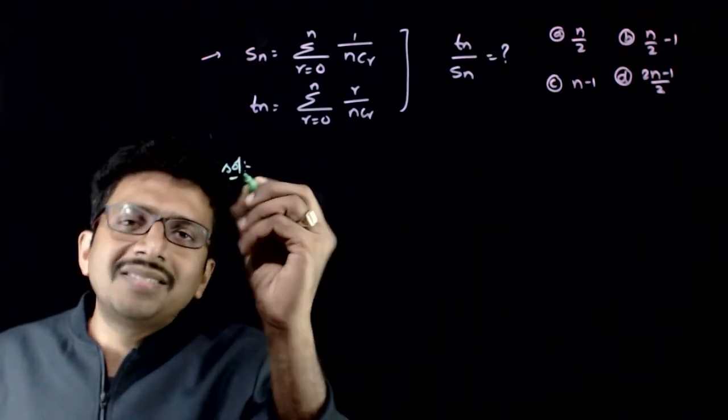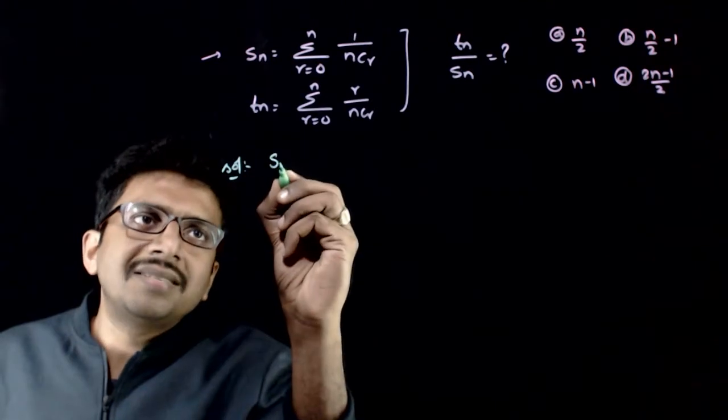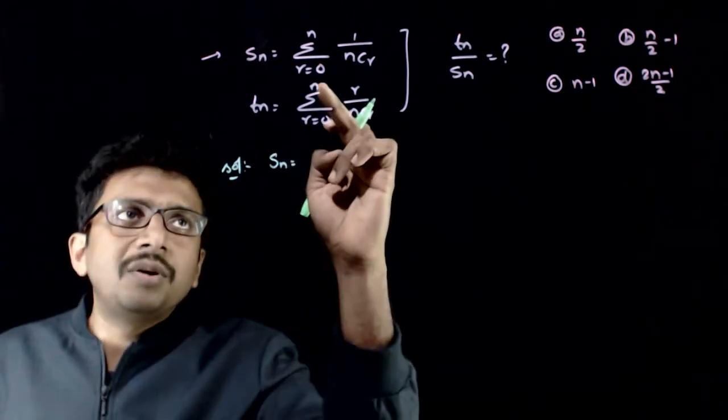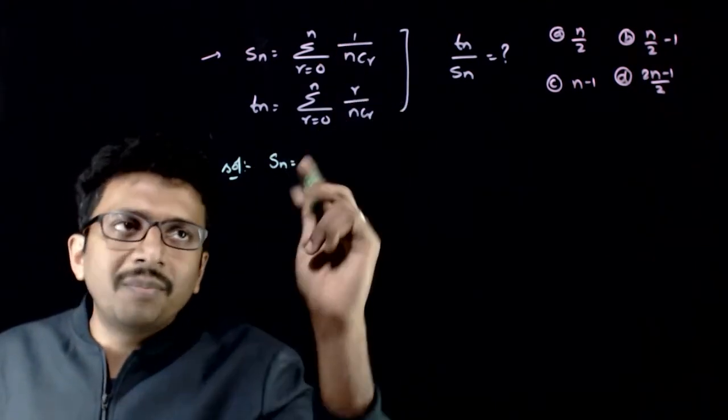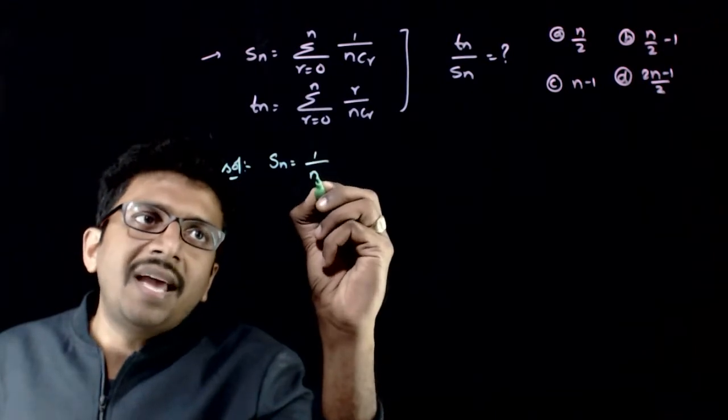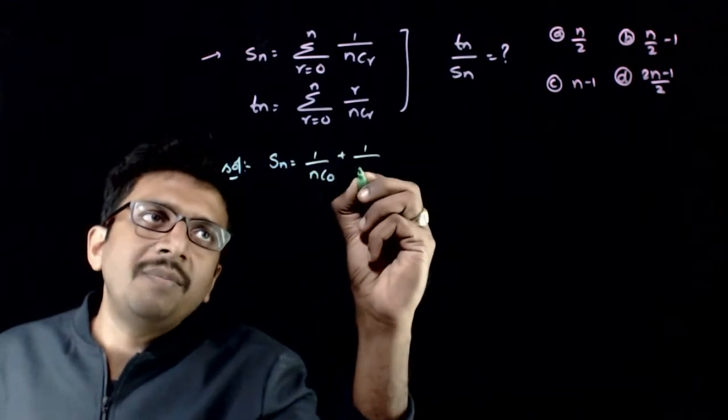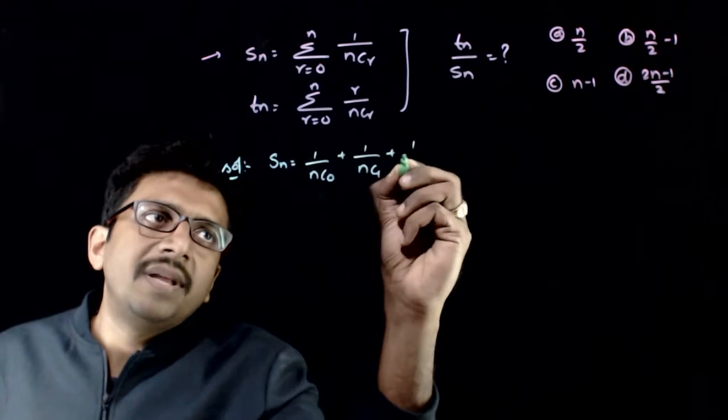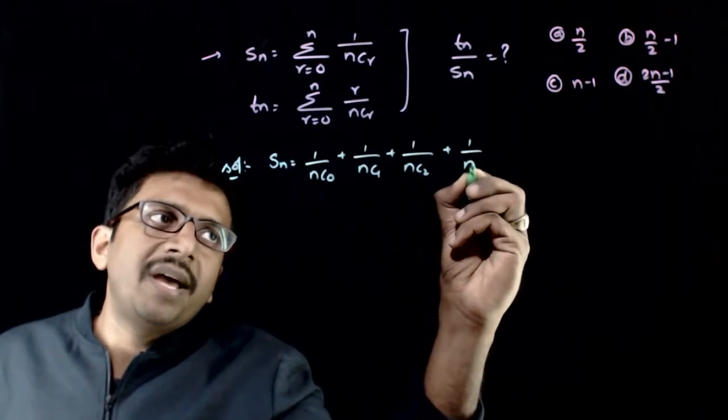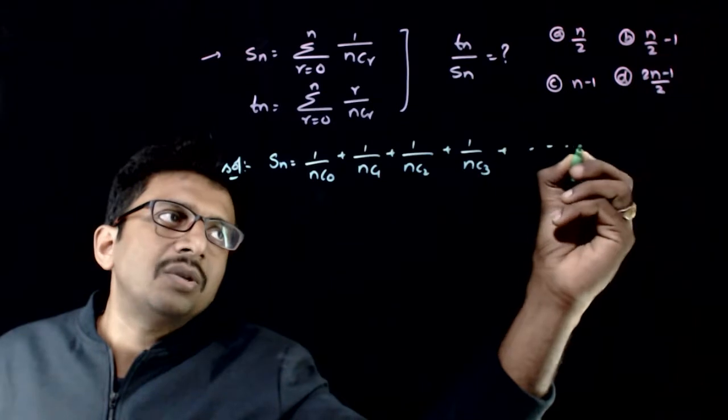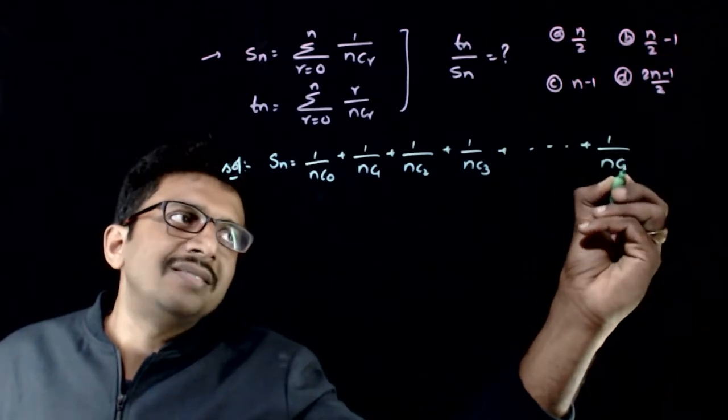If you try to understand this question carefully, Sn is nothing but the sum from r equals 0 to n, 1 by nCr. That is 1 by nC0 plus 1 by nC1 plus 1 by nC2 plus so on plus 1 by nCn.